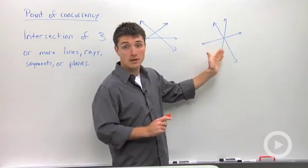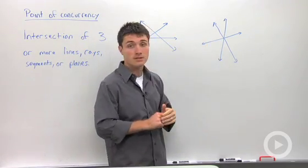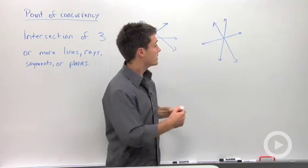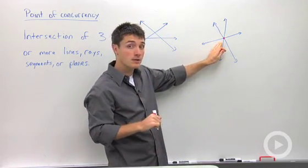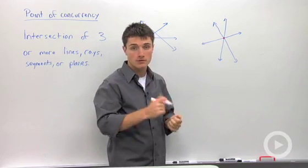If we look at these three lines, it's pretty clear that they all intersect in one point. That point where three lines intersect is our point of concurrency.